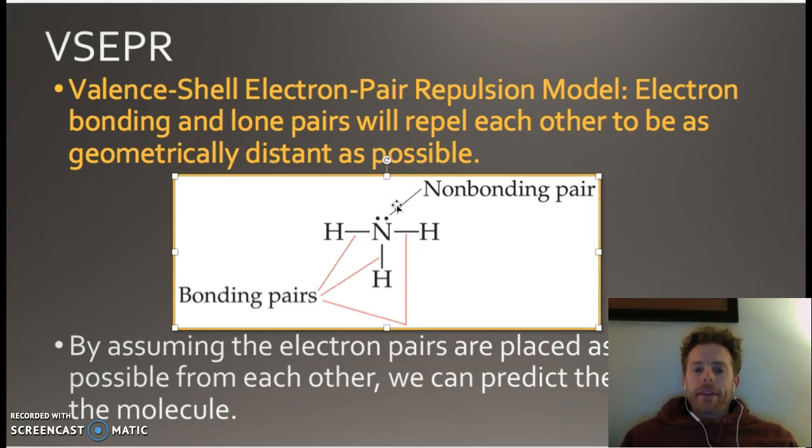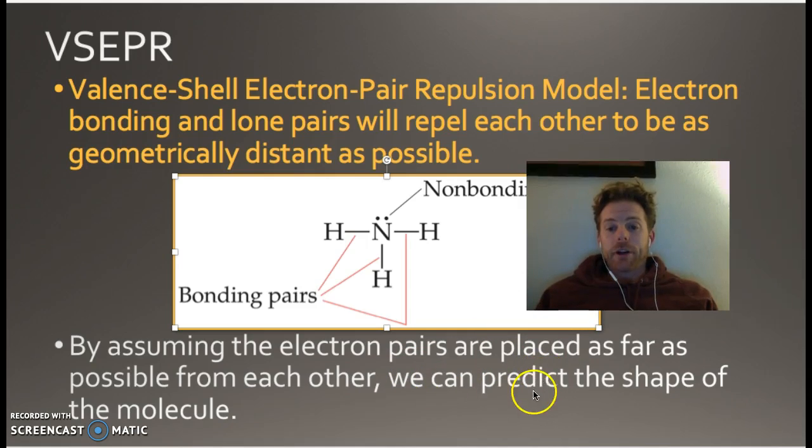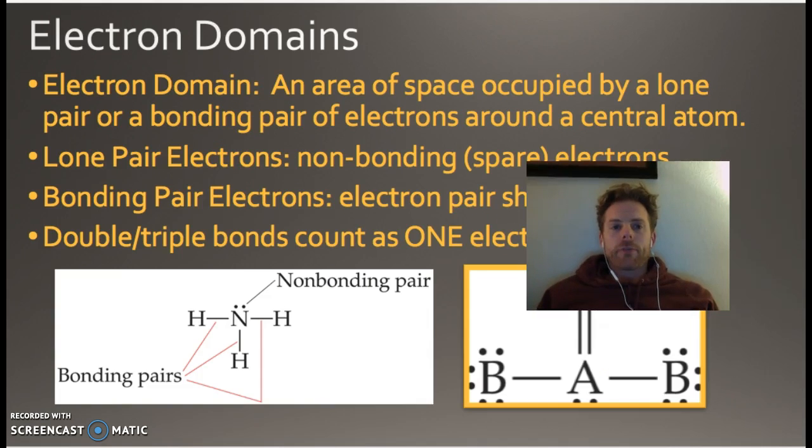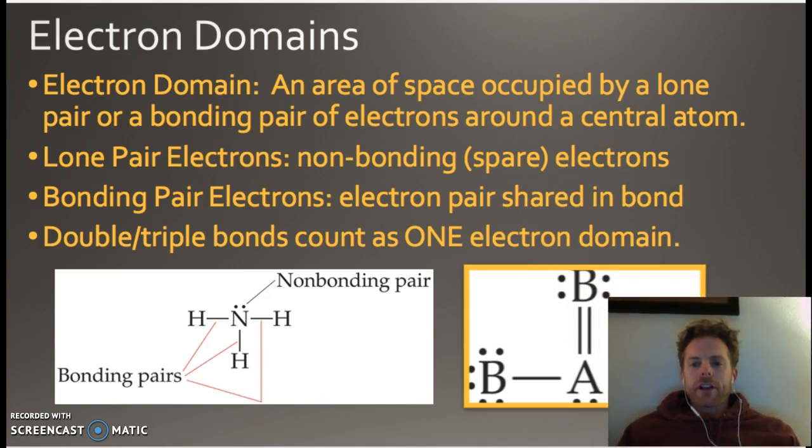Alright, so the main thing is you take the shapes that we learned last class, and we apply this concept that the bonded pairs are going to be different than the non-bonded pair. Okay, the electron pairs are always going to be as far away from each other as possible, and consequently we can predict the shape of the molecule.